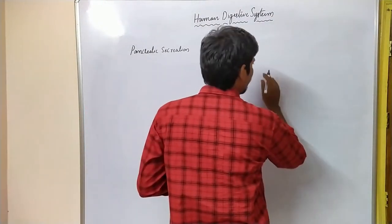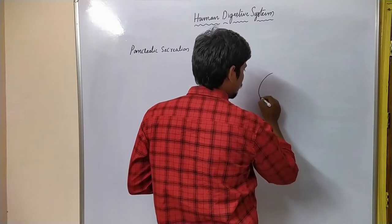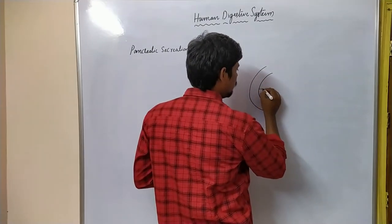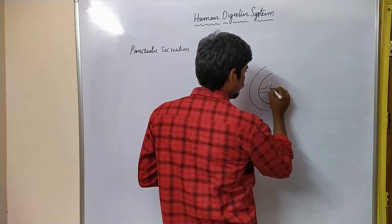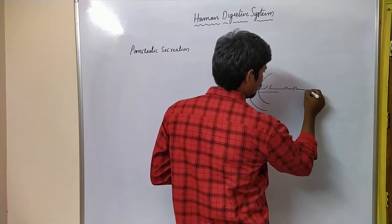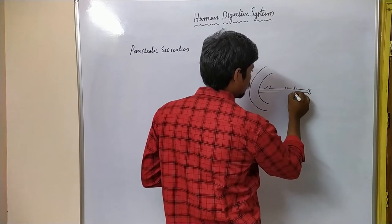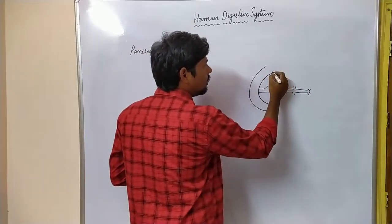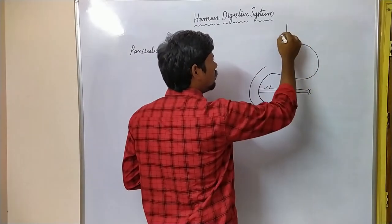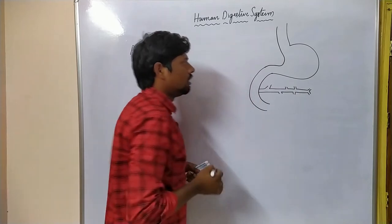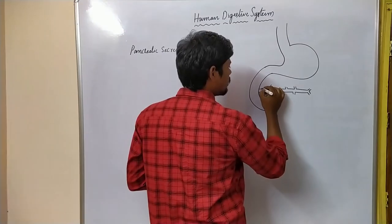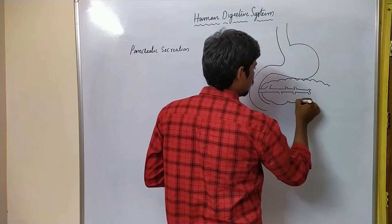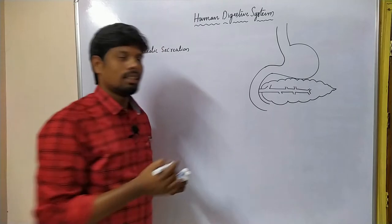We know very well where actually pancreas is present. This is the duodenum — below the stomach, there is a leaf-like structure that is called as the pancreas.